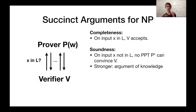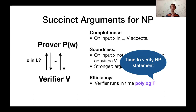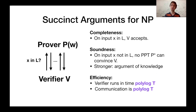The most important aspect of succinct arguments I want to talk about is that of efficiency. In particular, the verifier is supposed to run in time which is polylogarithmic in a time bound t, where t is the time to verify just the original NP statement — so if the prover just sends the witness over, this is the time it would take the verifier to check it. In this interactive succinct case, we require the verifier runs in polylogarithmic time in t, and the communication is also polylog in t.